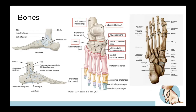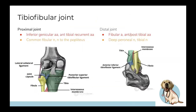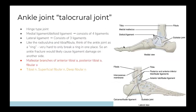Just a quick summary of the neurovascular rule: whatever artery and nerve crosses a joint also innervates that joint. Now for the ankle joint, called the talocrural joint — it's a hinge type joint, allowing your foot to move up and down.